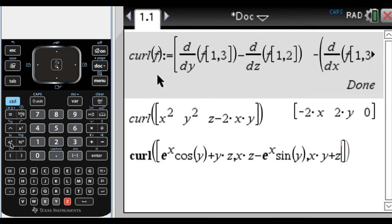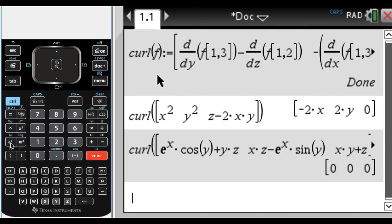All right, so this curl should be zero, because this is supposed to be a conservative vector field, so let's see. There you go. All right, so you can use it over and over again. You could define it, and then put it in my library, and make it available in all your documents. Probably a good idea. All right, it's up to you what you do with it. I hope you found this helpful, and good luck.